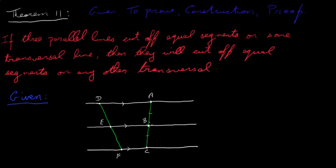This is our transversal line here; these three white lines are three parallel lines. You can see that the transversal line has been cut into two equal parts. The theorem says that if this happens — if three parallel lines cut a transversal into two equal parts — then any other transversal will also be cut into equal parts. In other words, DE will be equal to EF.